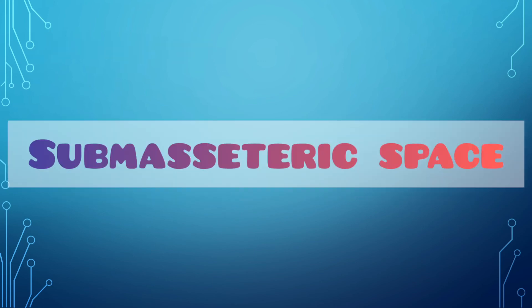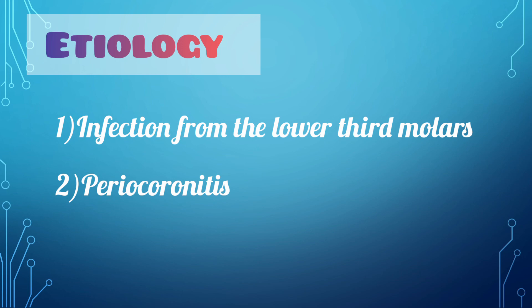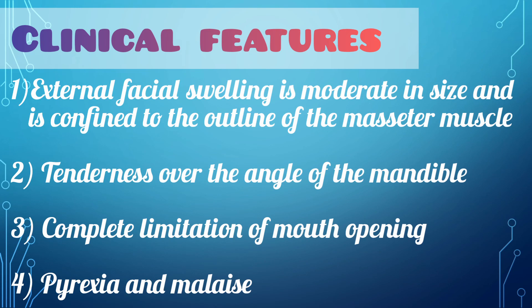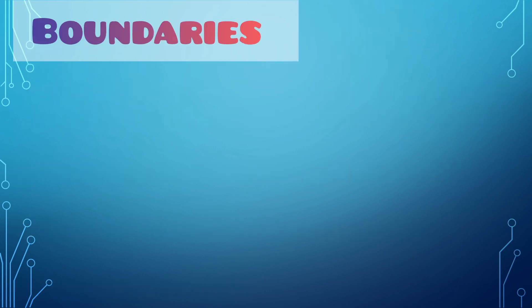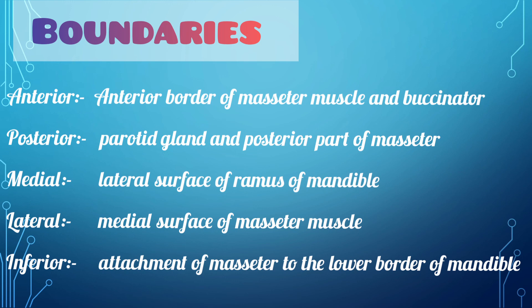The next secondary space is the submasseteric space. When pus accumulates between the ramus of the mandible and the masseter muscle, it produces a submasseteric space abscess. The etiology includes infection originating from the lower third molars or pericoronitis. Clinical features include external facial swelling moderate in size confined to the outline of the masseter muscle, tenderness over the angle of the mandible, almost complete limitation of mouth opening, and there may be pyrexia and malaise. Boundaries: anteriorly by the anterior border of the masseter and buccinator; posteriorly by the parotid gland and posterior masseter; medially by the lateral surface of the ramus; laterally by the medial surface of the masseter; inferiorly by the attachment of the masseter to the lower border of the mandible.